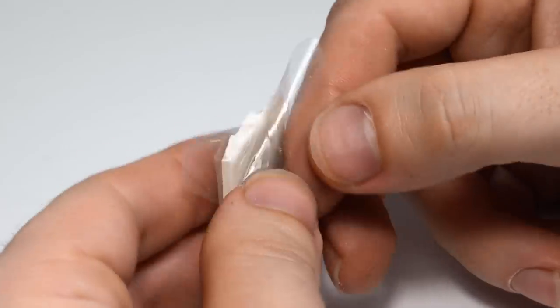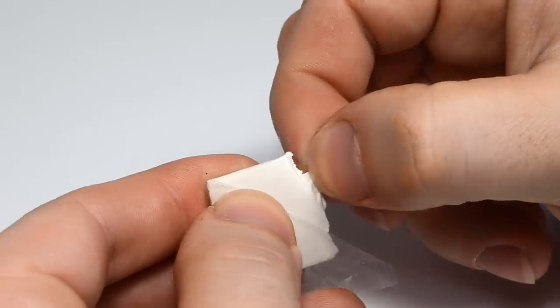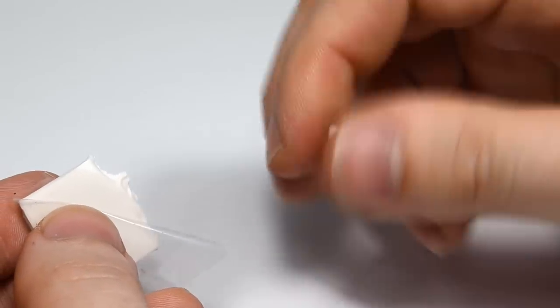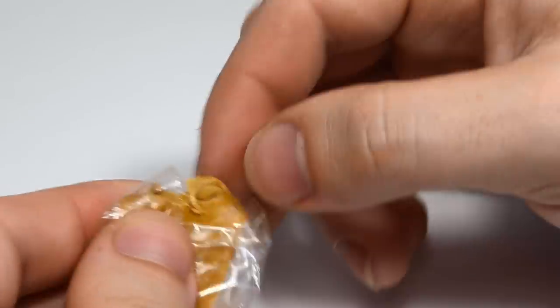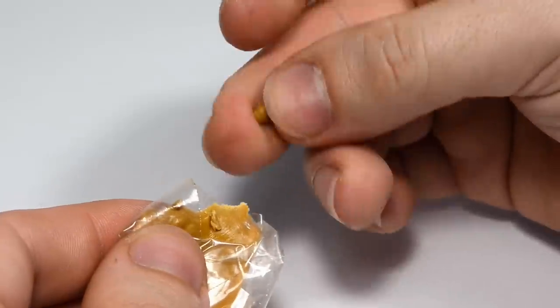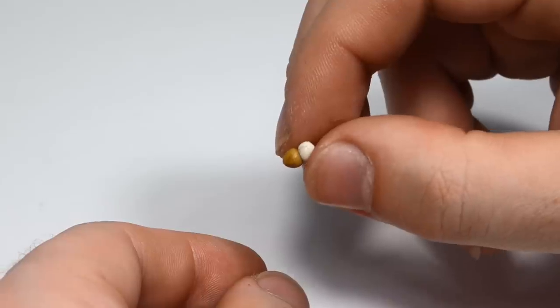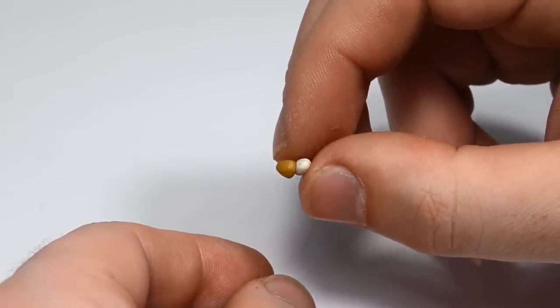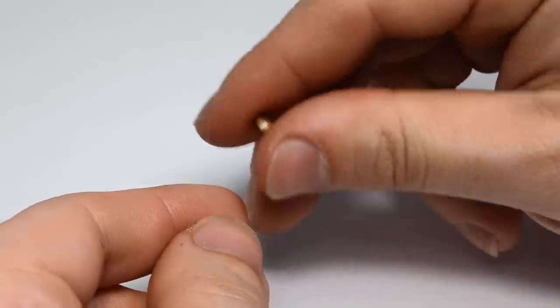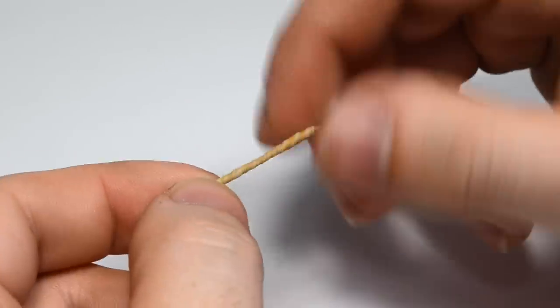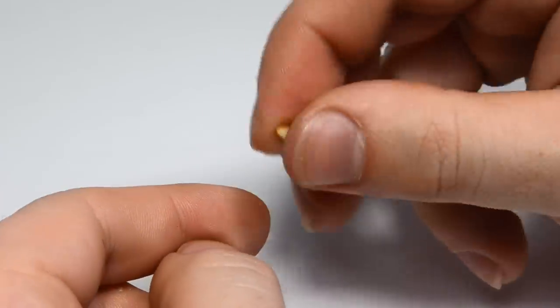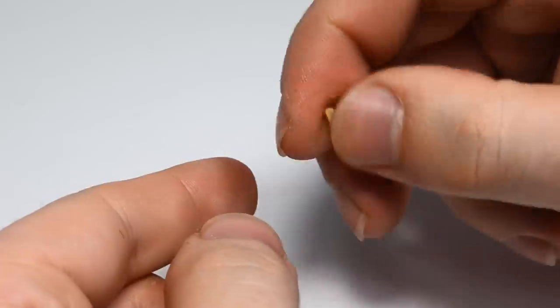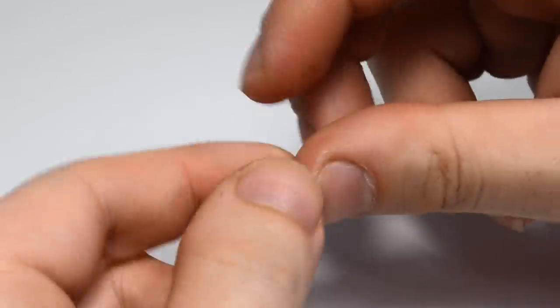Finally it's time to mix the putty components together. One thing I learned quickly is that if you mix too much, most of it will end up in trash, because it will dry faster than you can use it. So prepare two roughly same sized balls and mix them together. I think the most efficient method is to sort of twist them like a rope, then mix them together, twist again, mix again, until the white and yellow parts blend into one color.